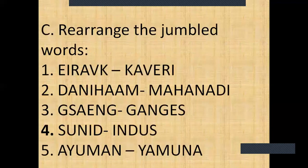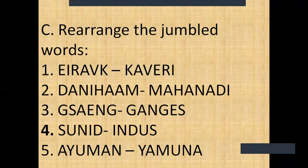Exercise C: Rearrange the jumbled words. 1. E, I, R, A, V, K — answer: Kaveri. 2. D, A, N, I, H, A, A, M — answer: Mahanadi. 3. G, S, A, E, N, G — answer: Ganges. 4. S, U, N, I, D — answer: Indus. 5. A, Y, U, M, A, N — answer: Yamuna.